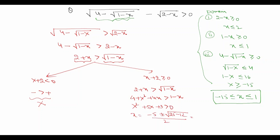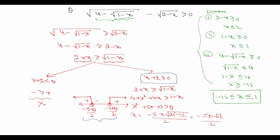Solving x² + 5x + 3 > 0 gives roots (-5 ± √13) / 2. On a number line, the solution is x < (-5 - √13)/2 or x > (-5 + √13)/2. Combined with the condition x ≥ -2 from Case 2 (noting that -2 lies between the two roots), the intersection gives x > (-5 + √13)/2.